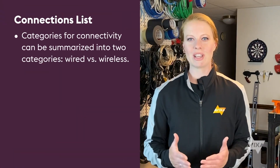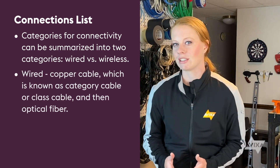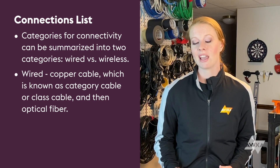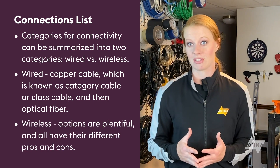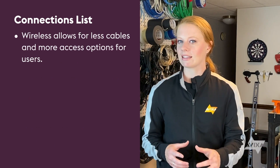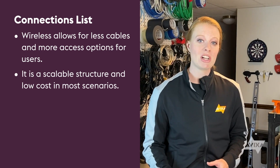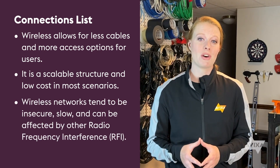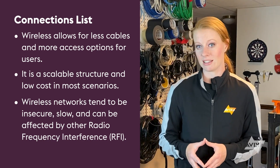Now it's time to review the possible mediums for connecting devices on a network. Connectivity can be summarized into two categories: wired versus wireless. Typical wired options include copper cable, known as category cable or class cable, and optical fiber. Typical wireless options are plentiful and all have their pros and cons. Wireless allows for fewer cables and more access options for users, is scalable, and typically low cost. However, wireless networks tend to be insecure, slow, and can be affected by radio frequency interference, or RFI.